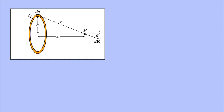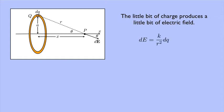And that means, if you look at the diagram, by vertical angles, this angle is also theta. So, the little bit of charge produces a little bit of electric field, dE equals k over r squared dq.